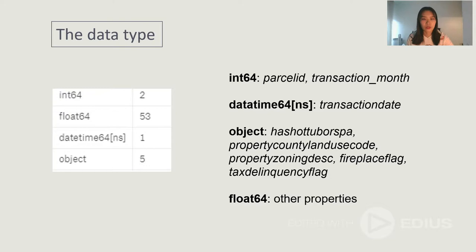Next, let's have a look at the digital type. After our analysis, we found that there are two integer types, parcel ID and the transaction month. One digital time type is the transaction date. Five object types like fireplace flag. And other 53 features are all float type.